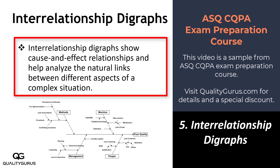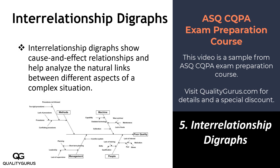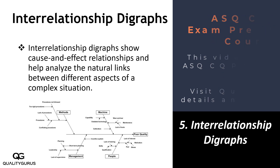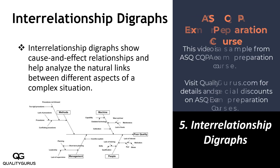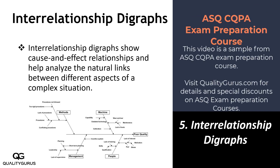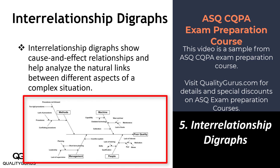This might look a little bit confusing, so let's understand this in simple terms. If you remember, earlier we talked about the cause and effect diagram when we were talking about the 7 basic quality tools. The cause and effect diagram is also called the fishbone diagram or the Ishikawa diagram.